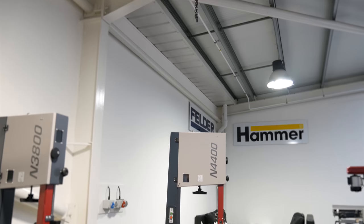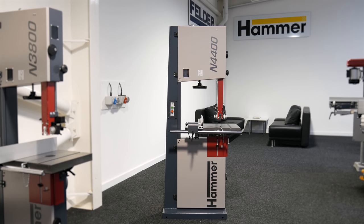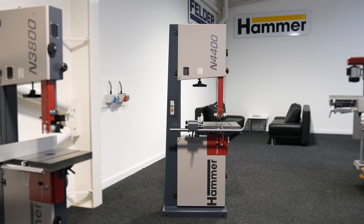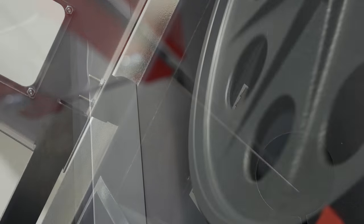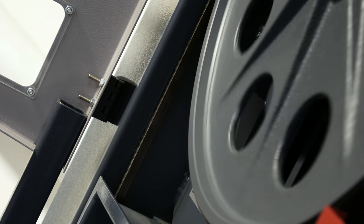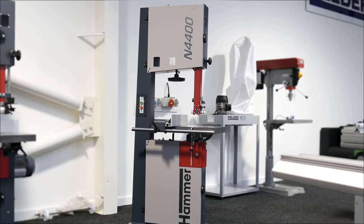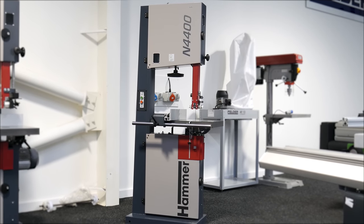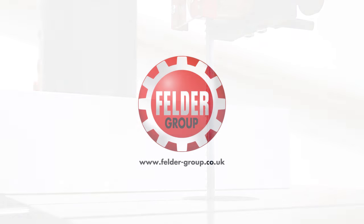The Hammer N4400 bandsaw is one of the best selling machines from the Felder Group range and it's not difficult to see why. Versatile and well equipped, the N4400 is proof that professional quality and accuracy don't have to cost the earth. To find out more about how the Hammer N4400 could be the machine for you, visit felder-group.co.uk